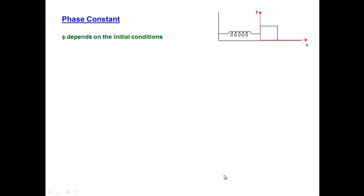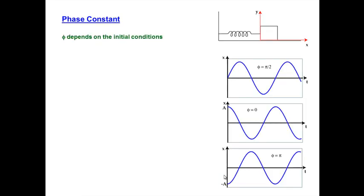Going on from here, let's discuss briefly the meaning of the phase constant that's in the solution for the equation of motion, which is x as a function of t. The phase constant phi is what connects the system's motion to its initial conditions. Initial conditions means where the system is at time t equals 0 and how fast it's moving. If we look at the equation for x as a function of t, remember it was a cosine of omega t plus phi.